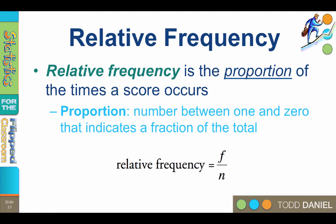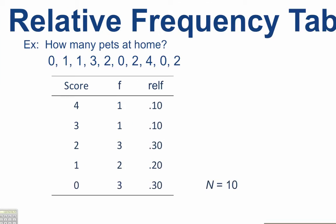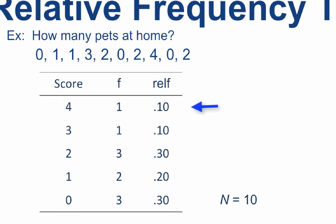Because my n equals 10, I will divide each frequency in the X column by 10. For the score of four with a frequency of one, one divided by 10 is 0.10. That is the first value of my relative frequency column. The score of three also has a frequency of one, so it also has a relative frequency of 0.10.